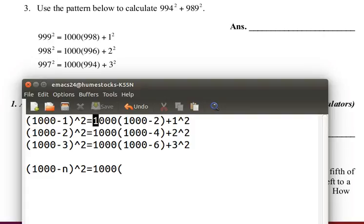This is 1000 minus 1, 1 times 2 is 2, 1000 minus 2. This is 1000 minus 2, 2 times 2 is 4, 1000 minus 4. This is 1000 minus 3, 3 times 2 is 6, this is 1000 minus 6. This is 1000 minus n, n times 2 is 2n, 1000 minus 2n.